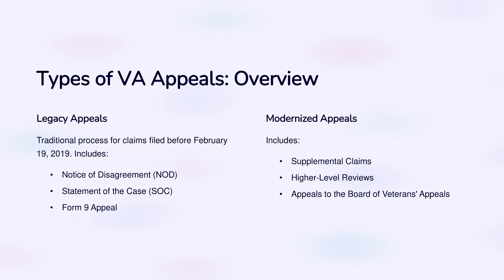Types of VA Appeals — Overview. Legacy Appeals: the traditional process for claims filed before February 19, 2019. This includes the Notice of Disagreement, Statement of the Case (SOC), and Form 9 Appeal. Modernized Appeals includes Supplemental Claims, Higher-Level Reviews, and Appeals to the Board of Veterans' Appeals.